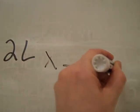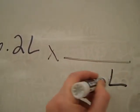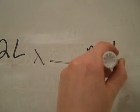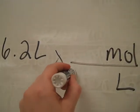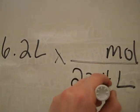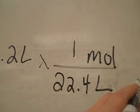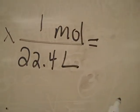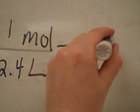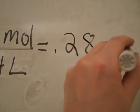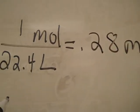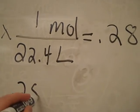And I'm going to set up my unit conversion to get out of liters and into moles. I know it's always 22.4 liters for one mole. And if you divide and do a little bit of rounding, you will once again get approximately 0.28 moles.